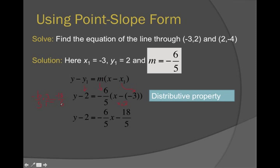My last step here to get y by itself is to add 2 to both sides, and I can say, voila, magic, we have -8/5 as our y-intercept.